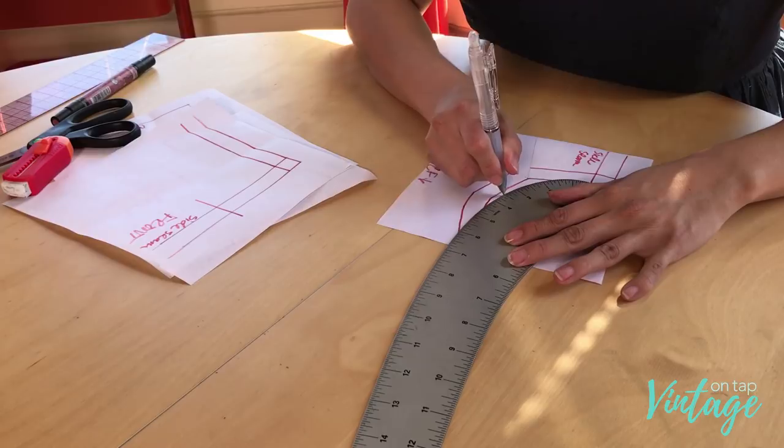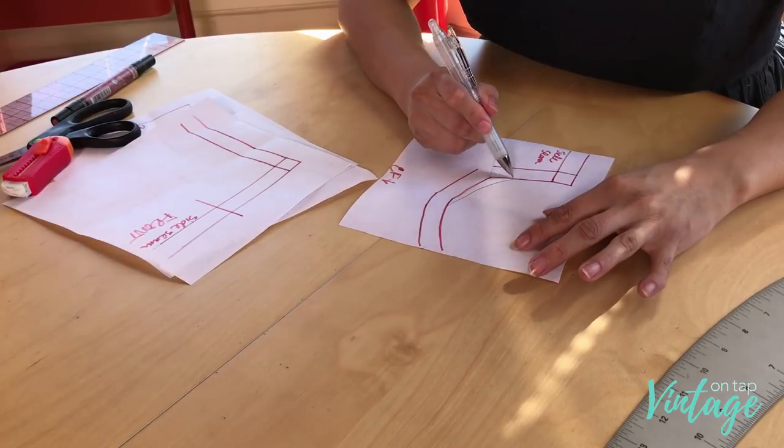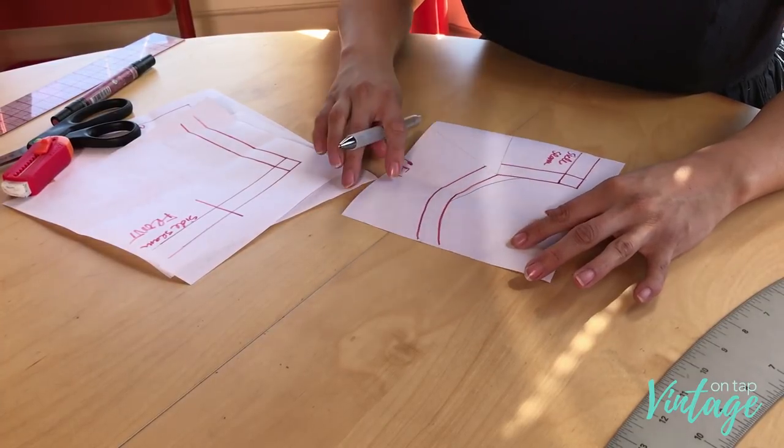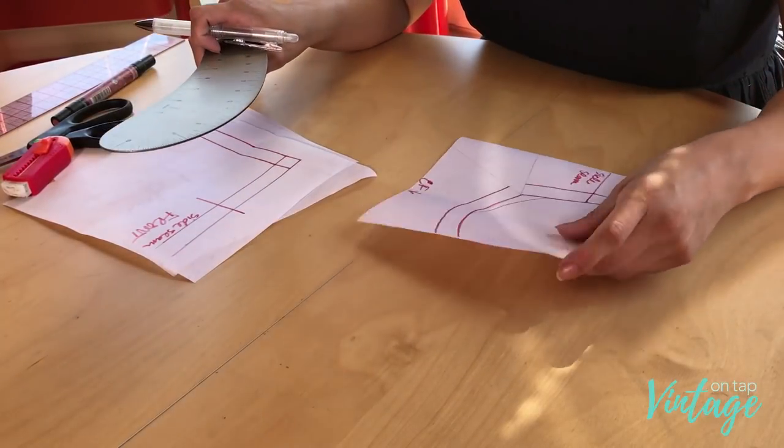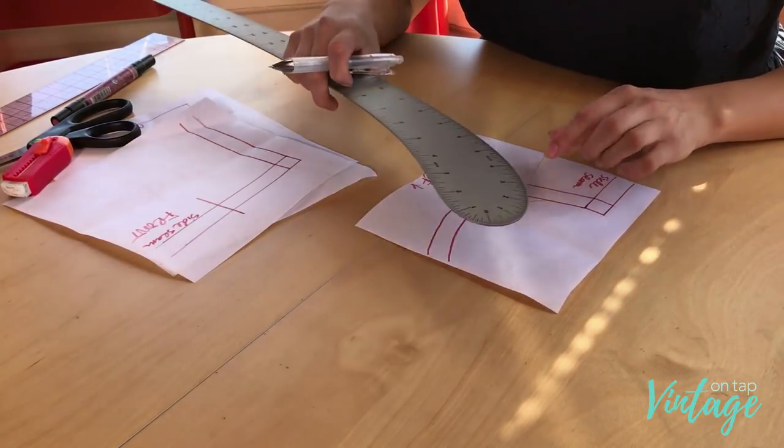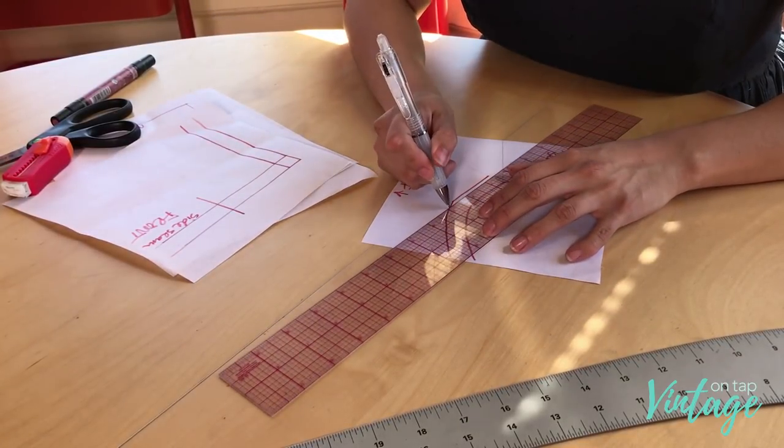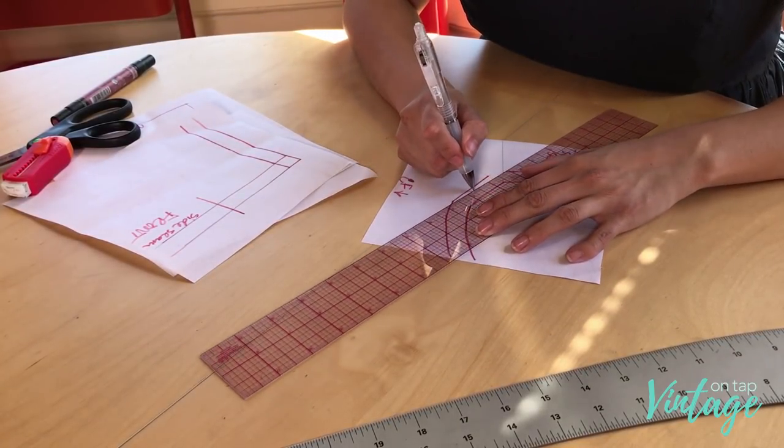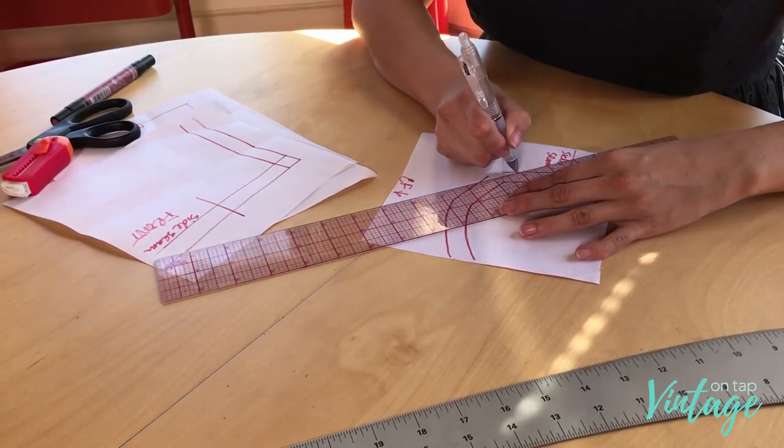So actually I'm going to flip this around. You can see there that I merged this entire area into one seamless curve. Now that portion of the curve will be a lot more smooth. Then you can use your clear ruler to redraw in the seam allowance if you draw them in. I like to draw them in my pattern, so I'm just going to do that so you guys can see.